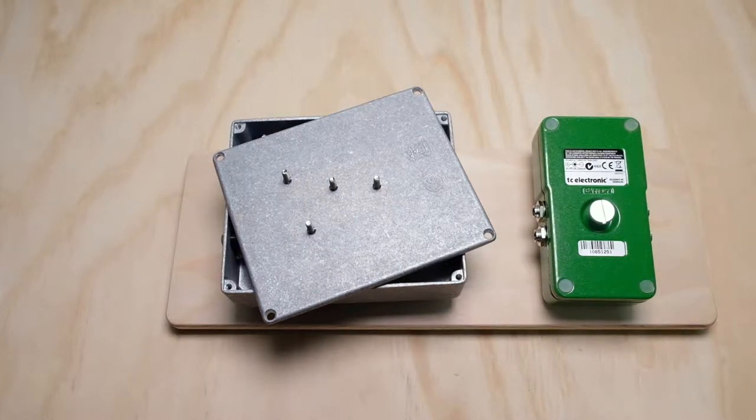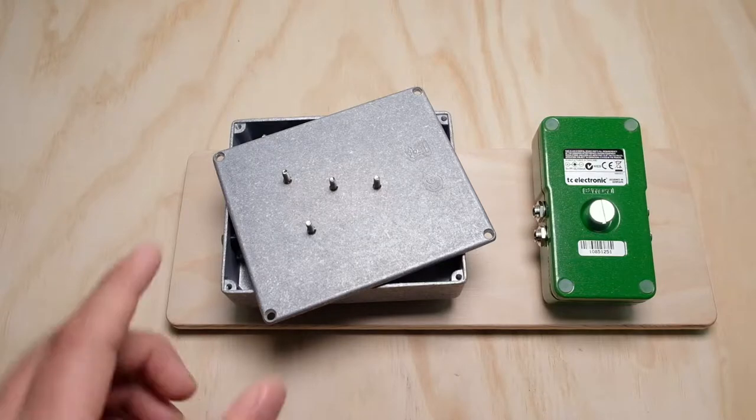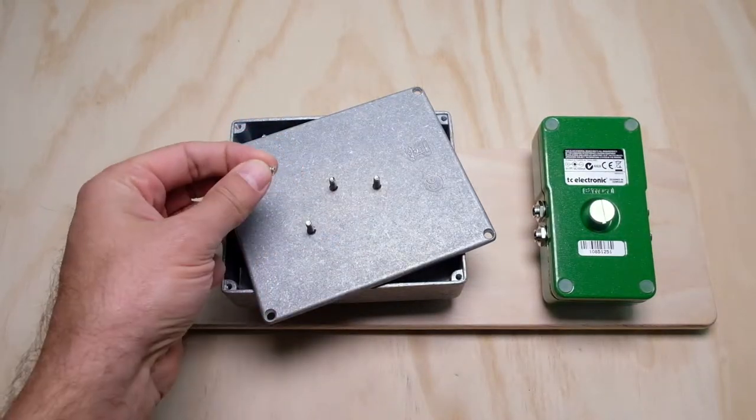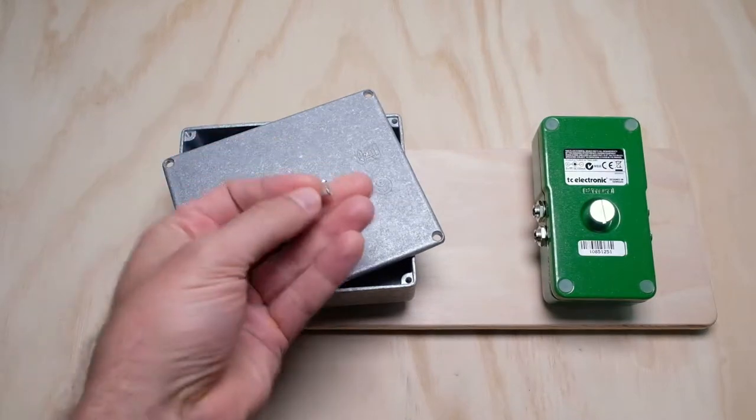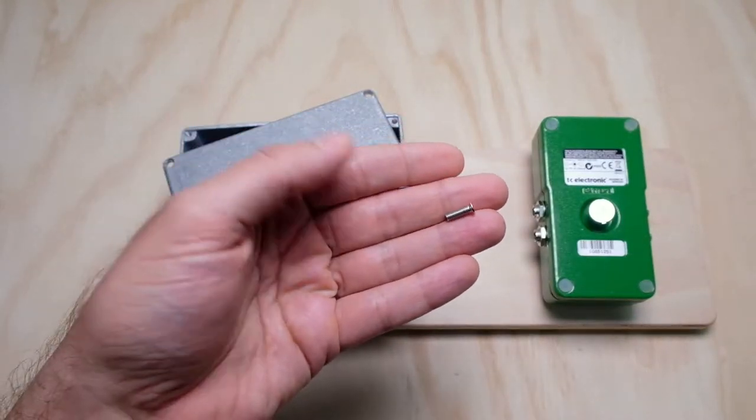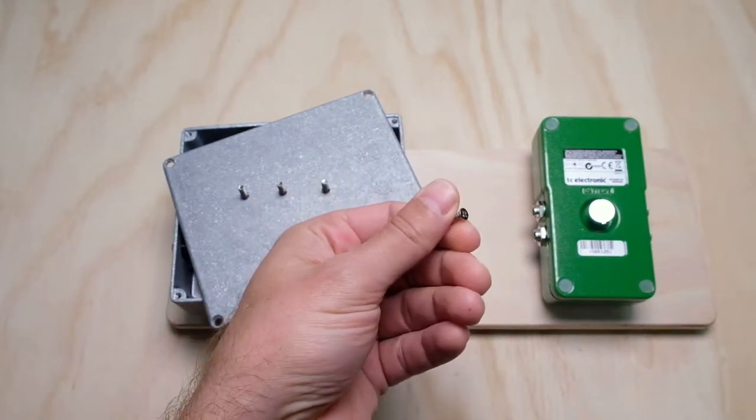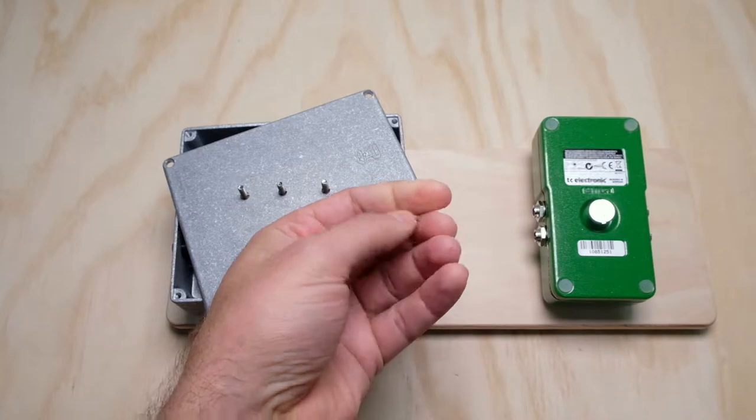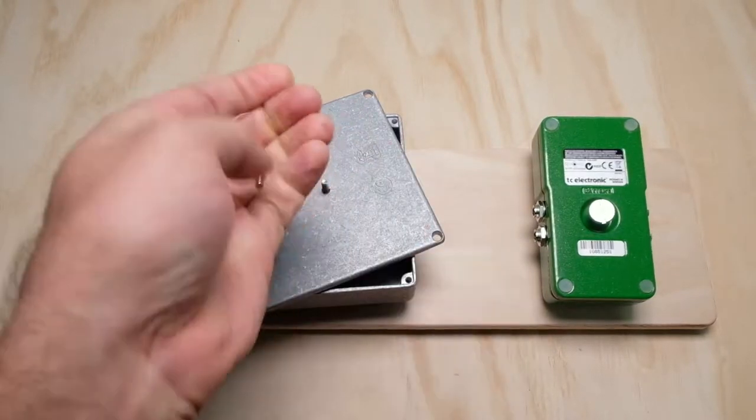So the process for bolting your pedals to your pedalboard goes like this. Take the back cover off and keep whatever was holding it on there. You're going to find out what bolt or screw you have, what type that is, and we're going to go shopping for a longer version of it. How much longer? However much thickness you have to make up for in the thickness of your pedalboard.